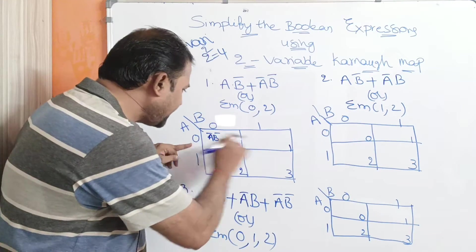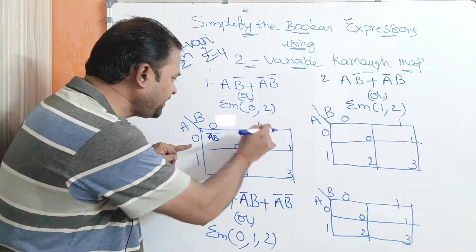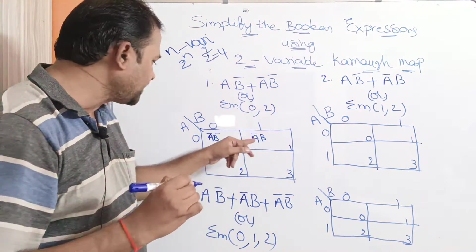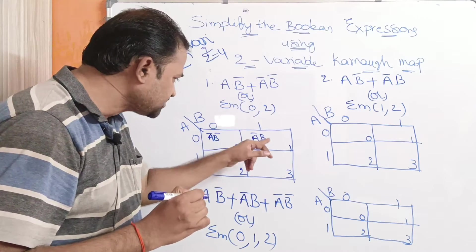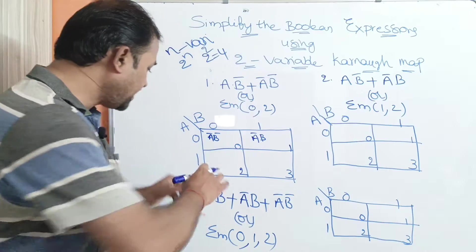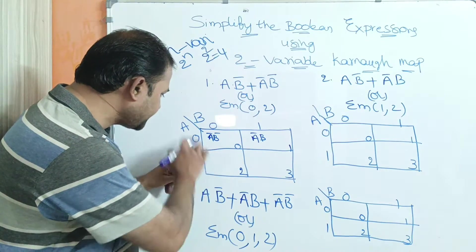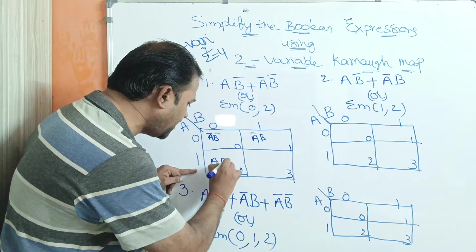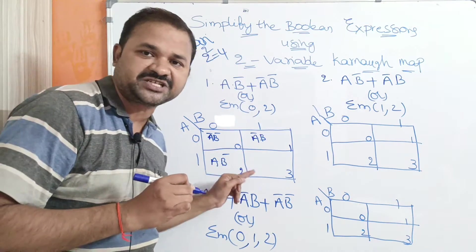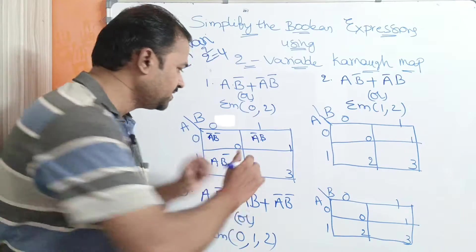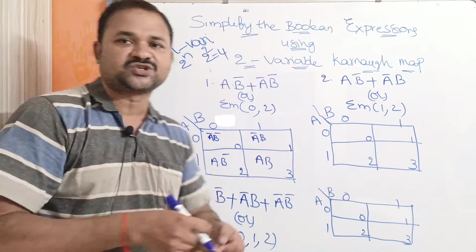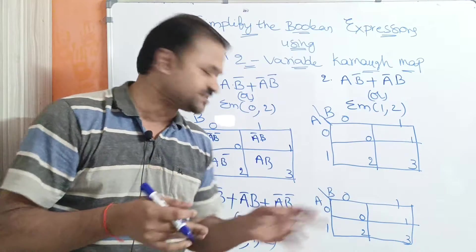The next cell represents ā with b equal to 1, so this cell represents āb. Since 0,1 in decimal notation is 1, this represents m1. Likewise, the next cell has a equal to 1 and b equal to 0, so that is ab̄, which is 1,0 in decimal — that is m2. Finally, a equals 1 and b equals 1 gives ab, which is 1,1 in decimal — that is m3.